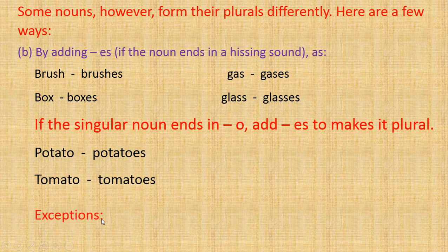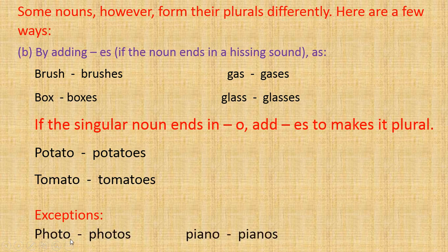Exceptions: there are a few words where these rules cannot be applied. For example, photo — the last letter is O, but we will not use -ES; we use only -S: photo→photos. Similarly, piano→pianos.